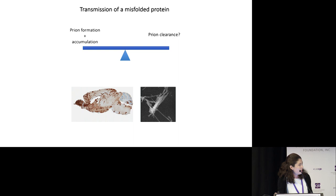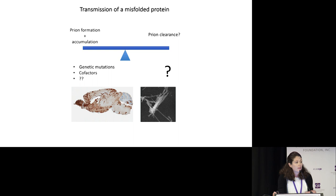But ultimately, even though prions are infectious, for them to actually cause disease, you need a process where the ability to form and accumulate prions outpaces any ways the body has to get rid of it. In the case of prion formation and accumulation, we know there are several factors that can accelerate this process.